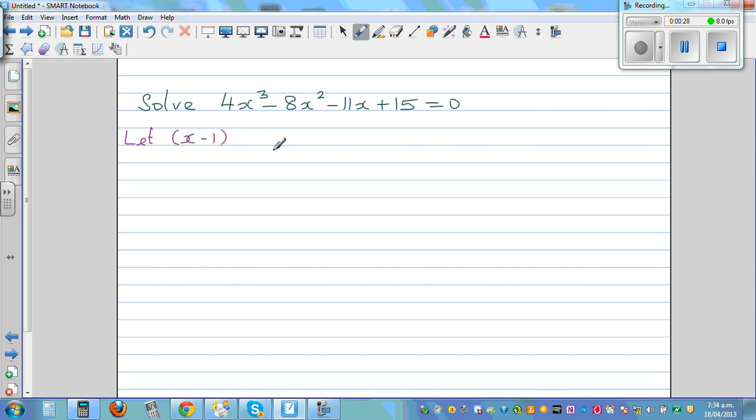We're going to let x minus 1 be a factor. This is by letting x minus 1 be a factor, which implies the remainder should be 0 when you're dividing. How do you find the remainder using the synthetic division?